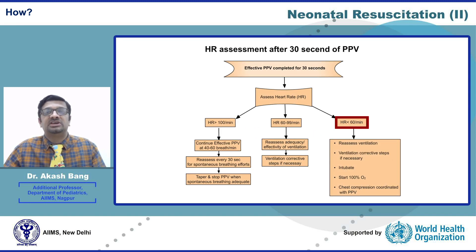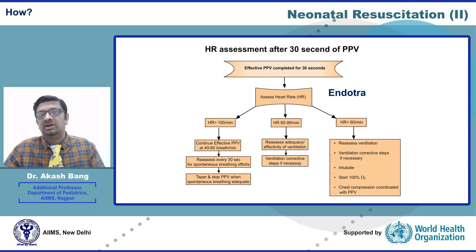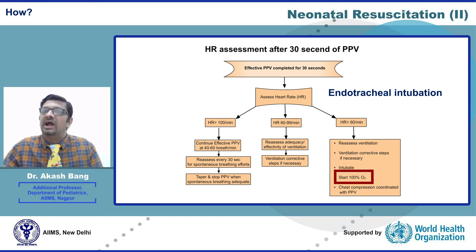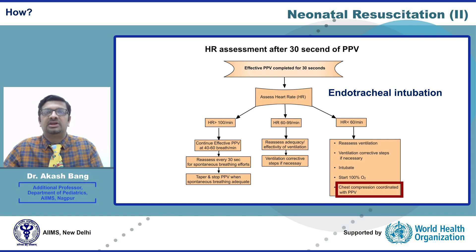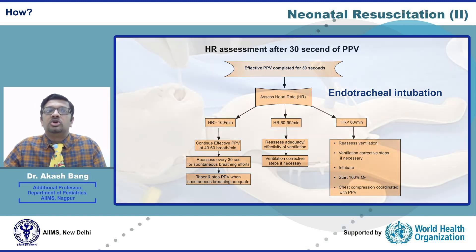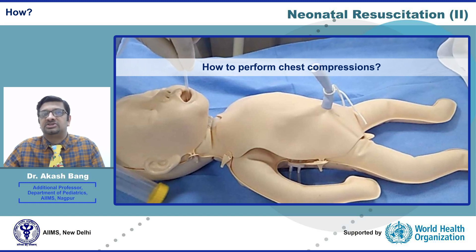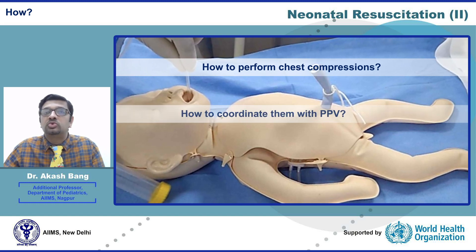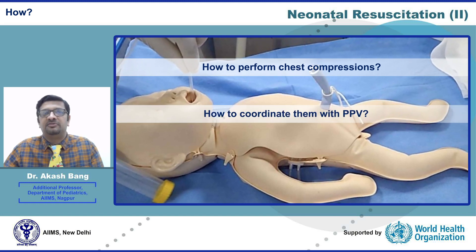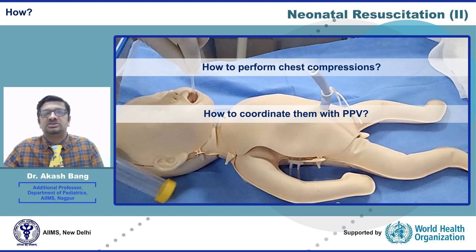Coming back to our neonatal resuscitation algorithm: when the heart rate is below 60 even after 30 seconds of effective PPV, we perform endotracheal intubation, increase oxygen to 100%, and start high-quality chest compressions coordinated with effective positive pressure ventilation. Let us now watch a brief video demonstration of how to perform chest compressions and coordinate them with PPV.